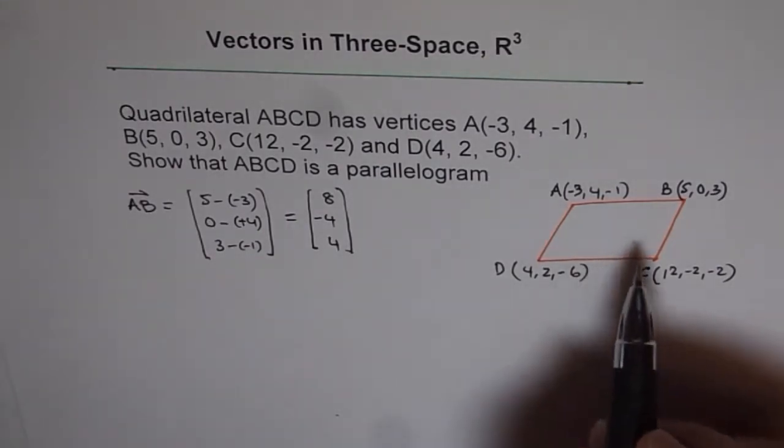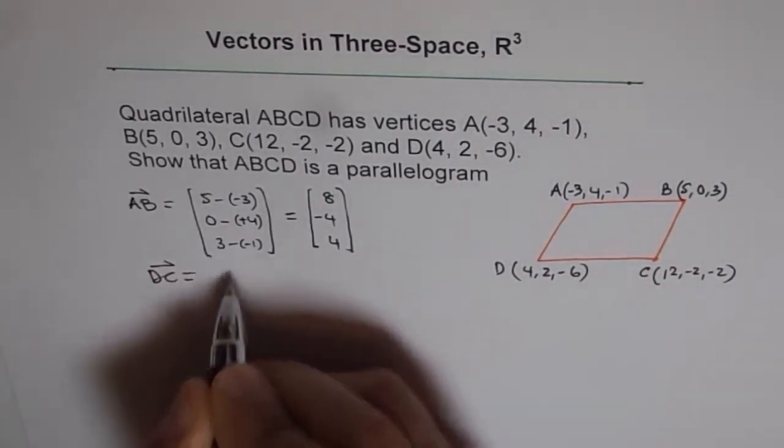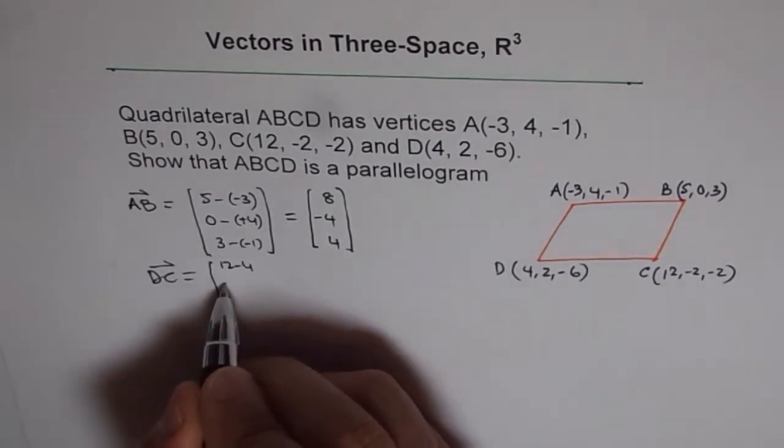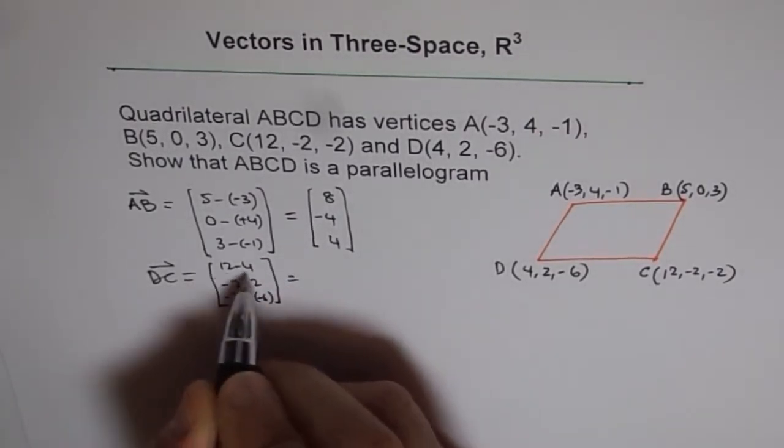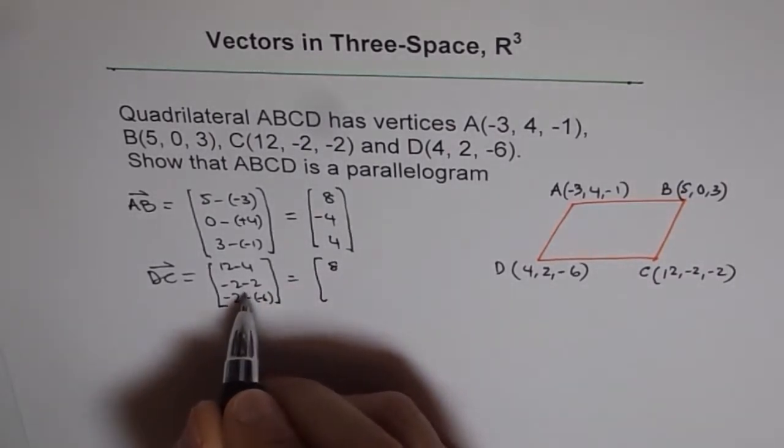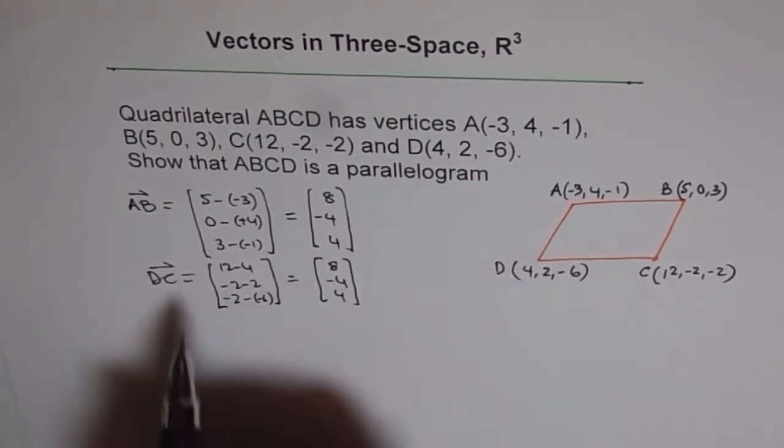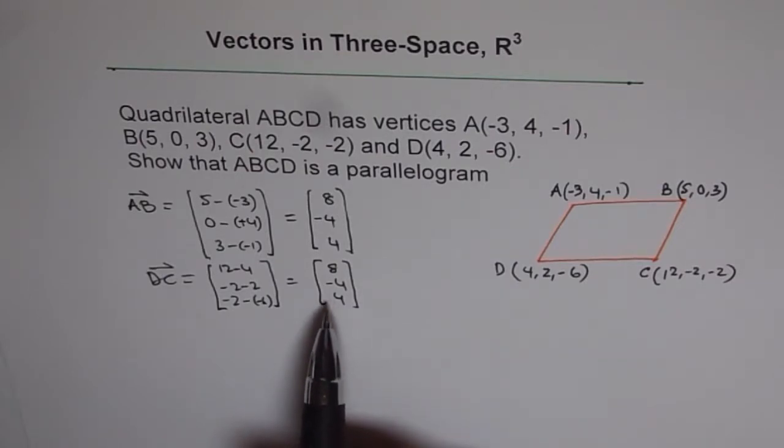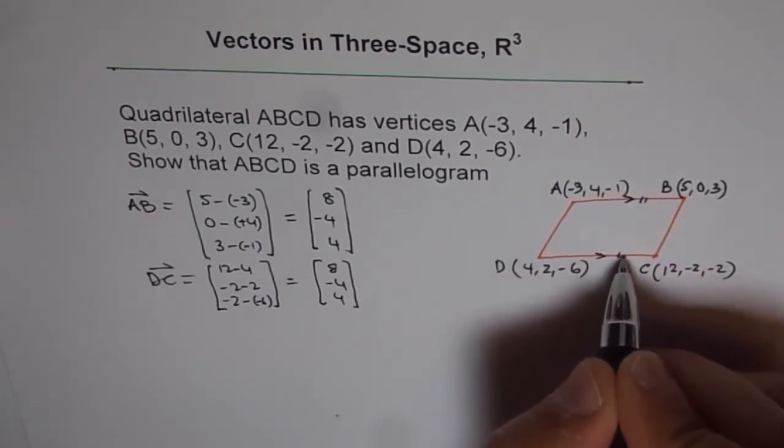AB should be parallel to DC. So let's find what is DC. We have DC is equal to 12 minus 4, -2 minus 2, -2 minus (-6). That is 8, -4, and 4. You can clearly see that AB is equal to DC. Both vectors are exactly same. That means they have same magnitude and same direction. That is how we can say that AB is parallel to DC, and they are equal.